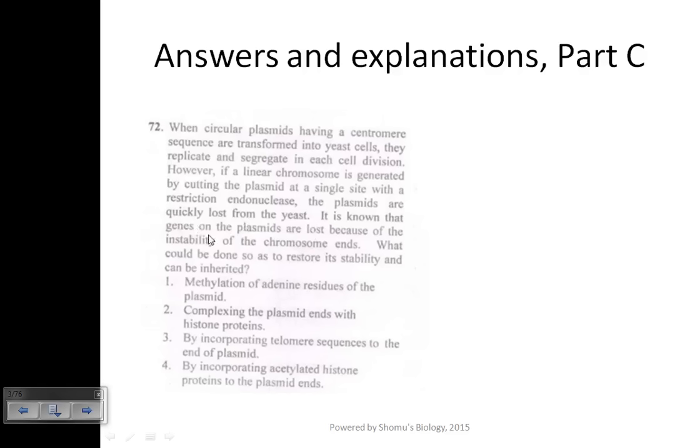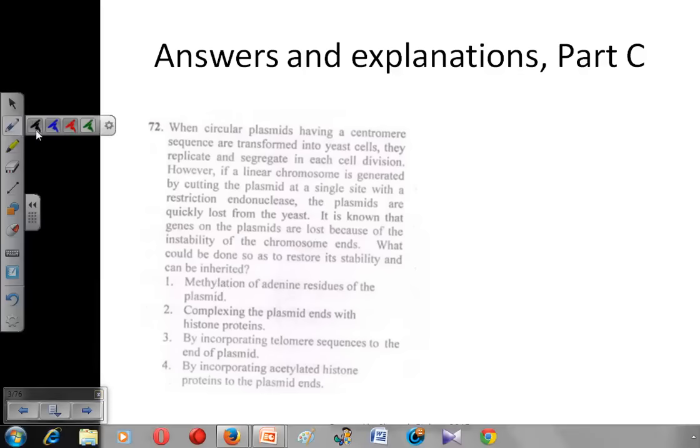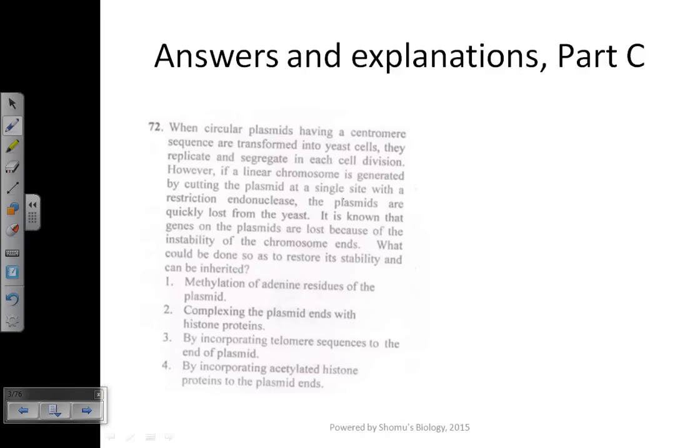It is known that genes on the plasmid are lost because of the instability of the chromosome ends. What could be done to restore its stability so it can be inherited? For these group C questions, read it twice or thrice until you understand. In this case, the scenario is: